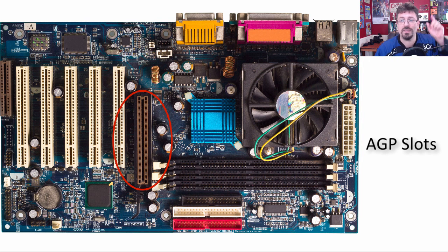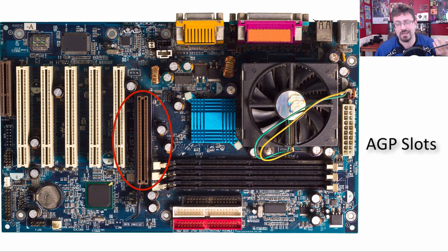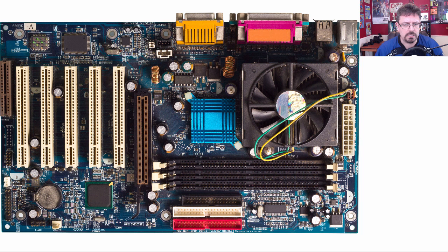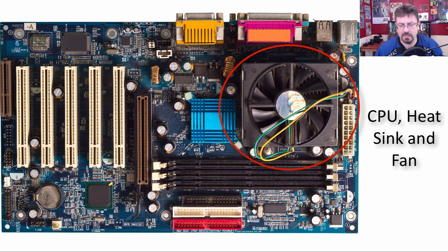Before the AGP, you could have a video card plug into your PCI slot, but PCI was not fast enough for video. So they modified it and made a special video card connection — the AGP. You'd only have one AGP slot on a motherboard, as opposed to PCI Express 16 where you can have more than one. Here we're seeing a fan, and under that fan is a heat sink, and under the heat sink is the CPU.